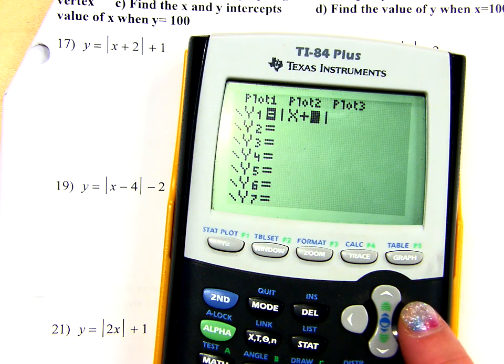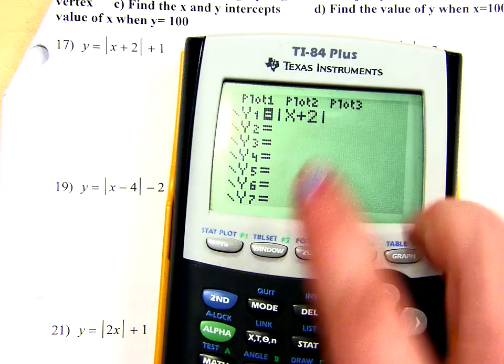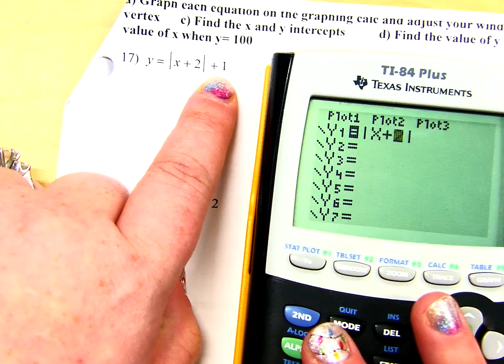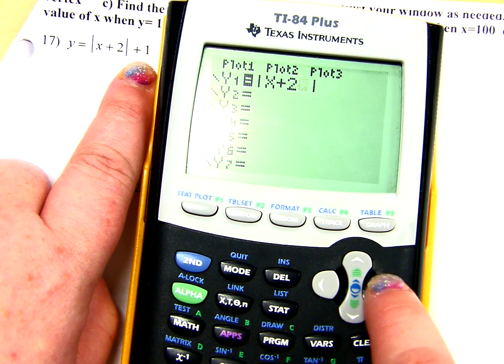I want X plus 2. If you're on a yellow calculator, to get out of the absolute value, because now I have to put the plus 1, and that's not in the absolute value brackets. So now you're just going to use your right arrow key to get out of it.